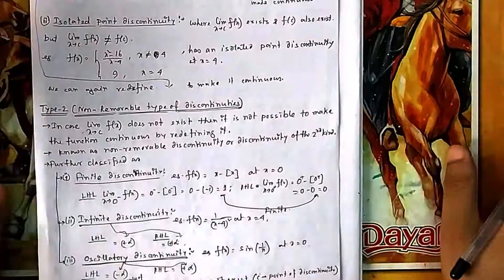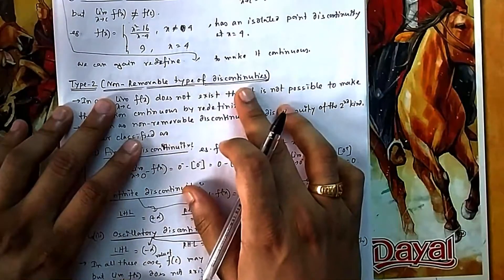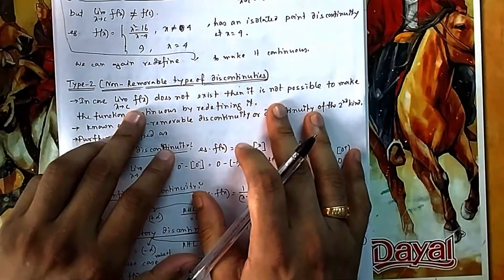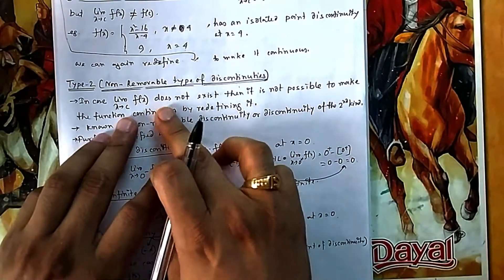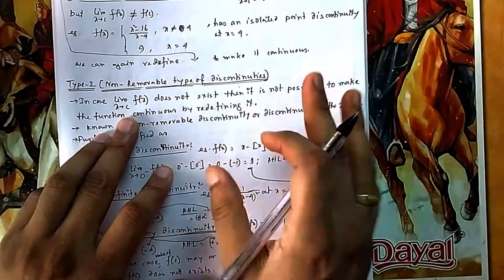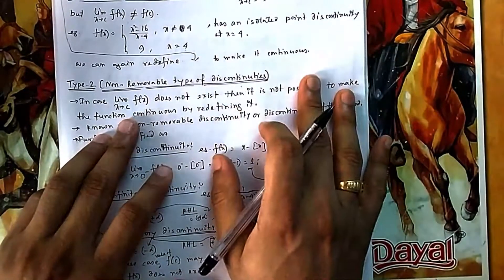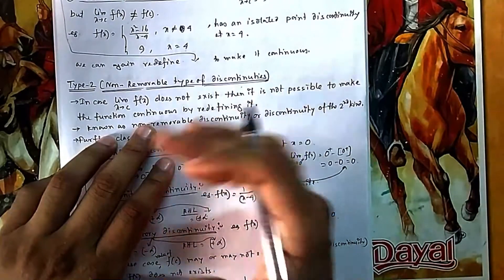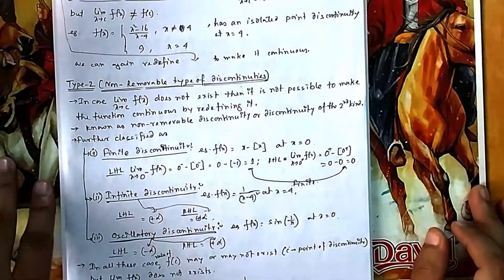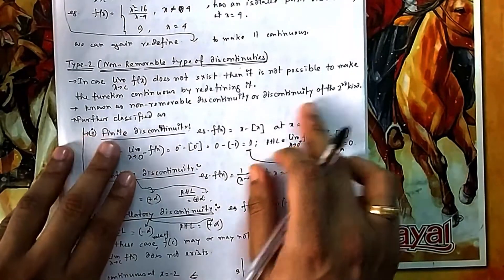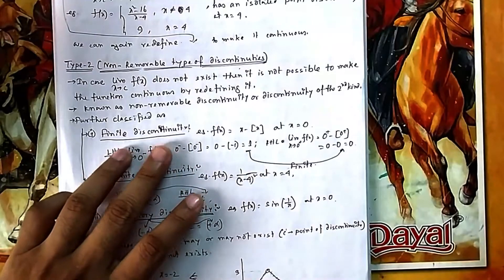In Type 2, we have non-removable discontinuity. Here, the limit itself does not exist — whether f(c) is defined or not doesn't matter. Since the limit does not exist, you cannot redefine the function to make it continuous. That's why it is called non-removable discontinuity, or discontinuity of the second kind. It can be further classified into finite, infinite, and oscillatory discontinuity.